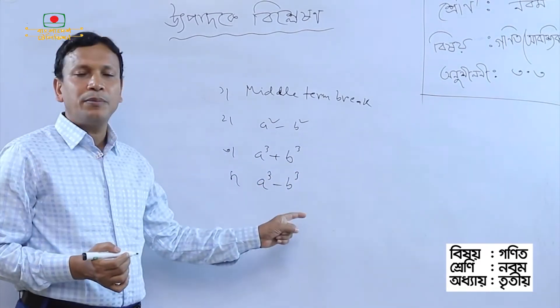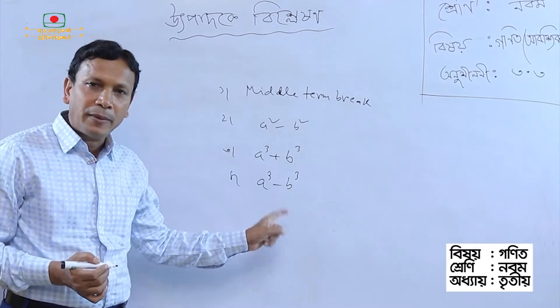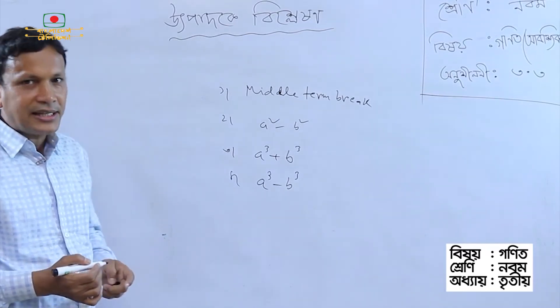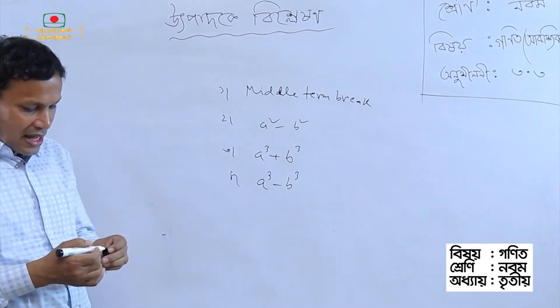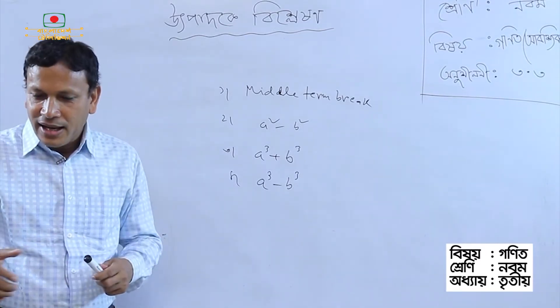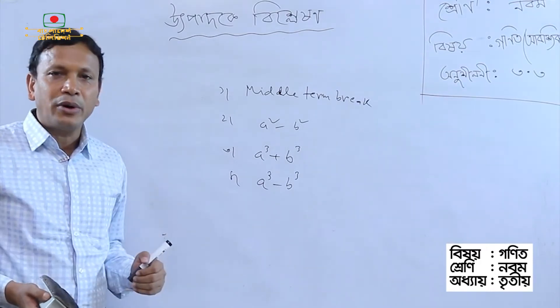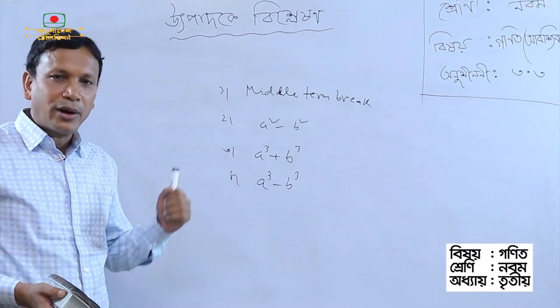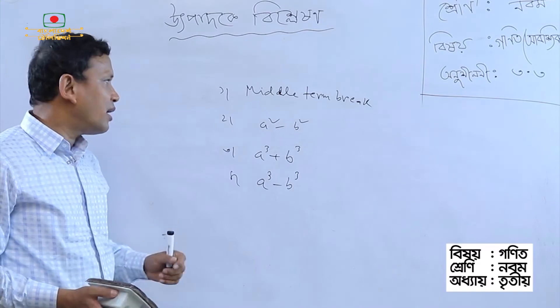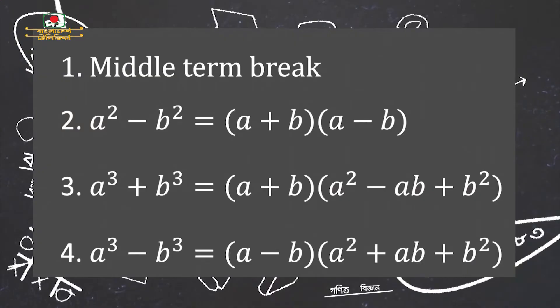A cube minus b cube is divided by a cube. Therefore, we will know that the cube is divided by a cube. Let's get to know.